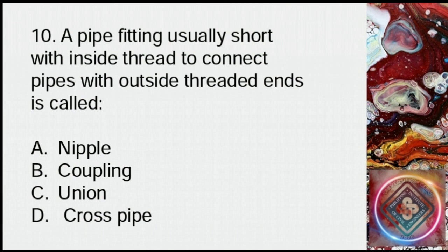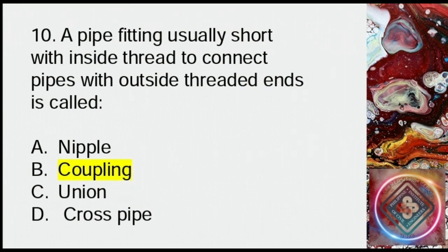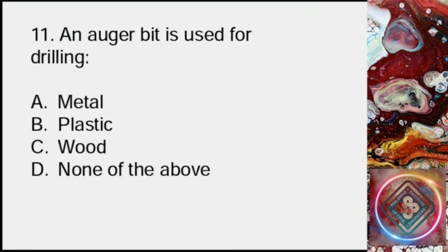Question 10: A pipe fitting usually short with inside thread to connect pipes with outside threaded ends is called: A: Nipple, B: Coupling, C: Union, D: Cross pipe. Answer: A, nipple.